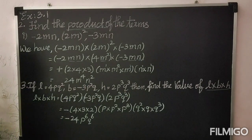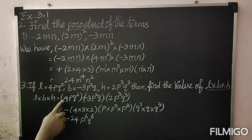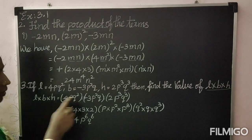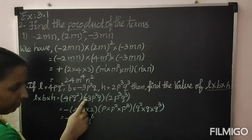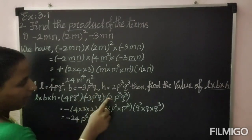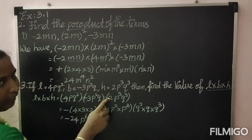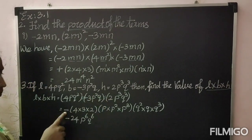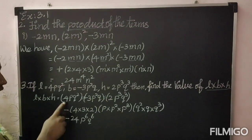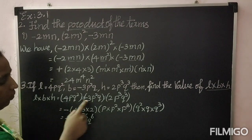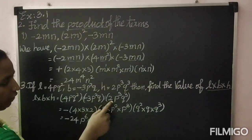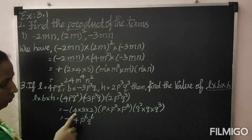First we have to multiply the signs. Here we have plus, plus into minus gives minus, minus into plus gives minus. Next, numerical coefficients: 4 into 3 into 2.